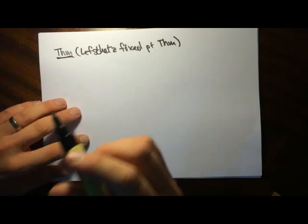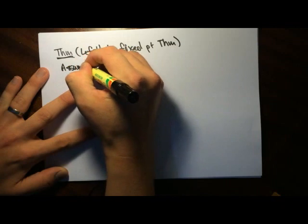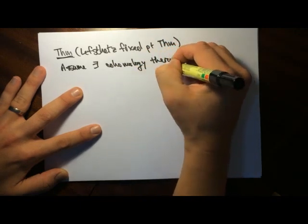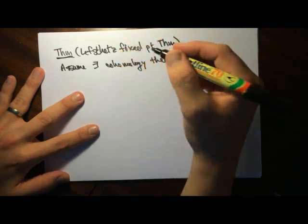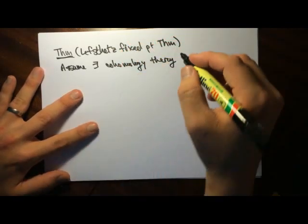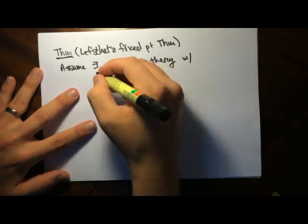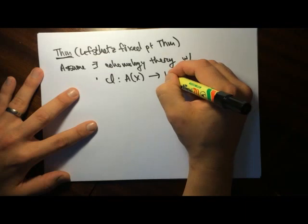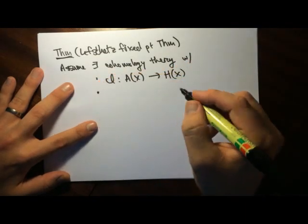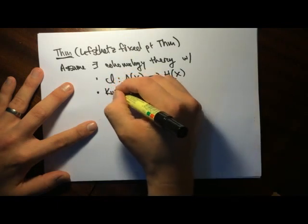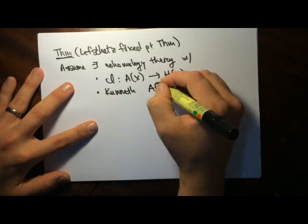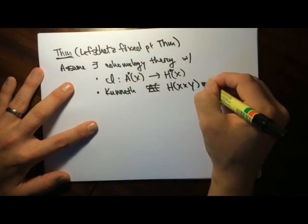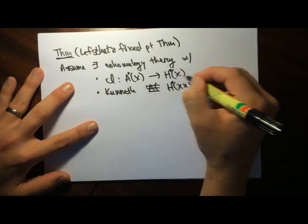The idea is to assume there exists a cohomology theory. This is actually going to be a vague cohomology theory, but with a cycle class map from the Chow ring into the cohomology ring, and there's also going to be a Künneth formula. We'll do it for X cross Y — these are going to be graded rings, these cohomology rings.